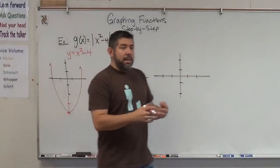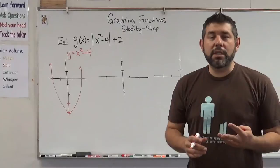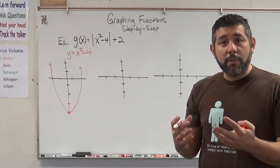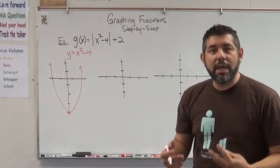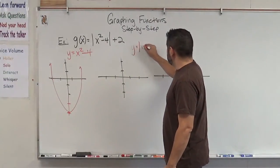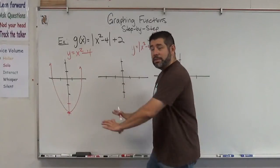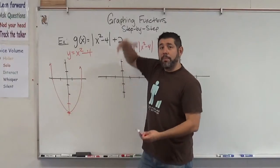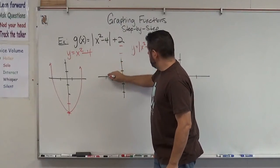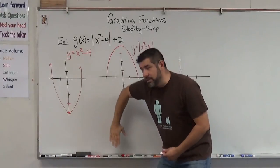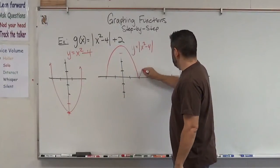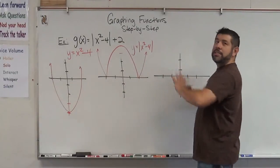Now we apply the absolute value. The absolute value does something similar to squaring — squaring made everything positive and increased faster, but absolute value does not make it increase faster; it just makes everything negative become positive. So it's going to do the same thing except not really curve it. Everything that's negative is going to be made positive — I'm going to take everything below the x-axis and flip it up, reflecting it about the x-axis, while everything already above stays there. It makes this kind of big W shape.